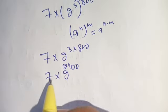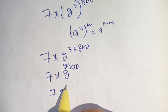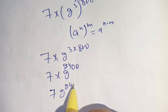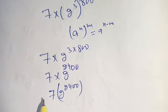Thus, our final resultant is equal to 7 times 2 raised to power 2400, which is the required solution of this problem.